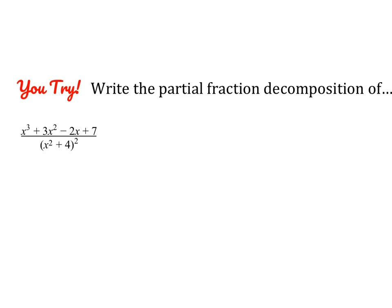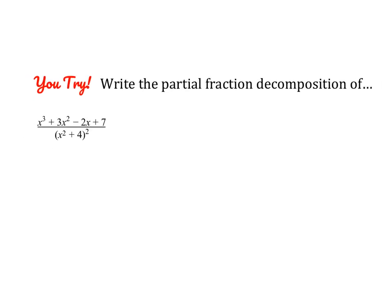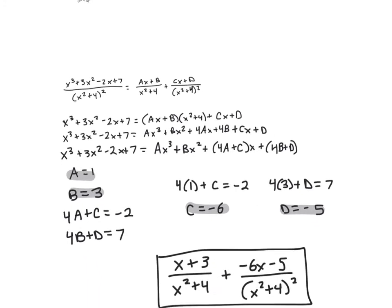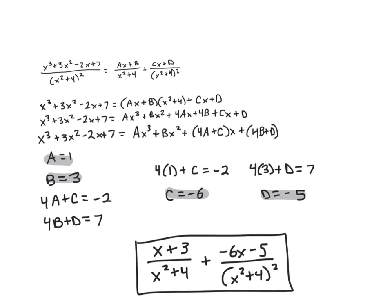Go ahead and pause the video and give this problem a try. Check the setup of your decomposition: you have one fraction for x squared plus 4 and one fraction for x squared plus 4 squared, and both numerators need to be binomials — ax plus b and cx plus d. Multiply both sides by the LCD, foil it out and combine like terms. Your four equations are: a equals 1, b equals 3, 4a plus c equals negative 2, and 4b plus d equals 7. Do a little substitution and you can solve for c and d.